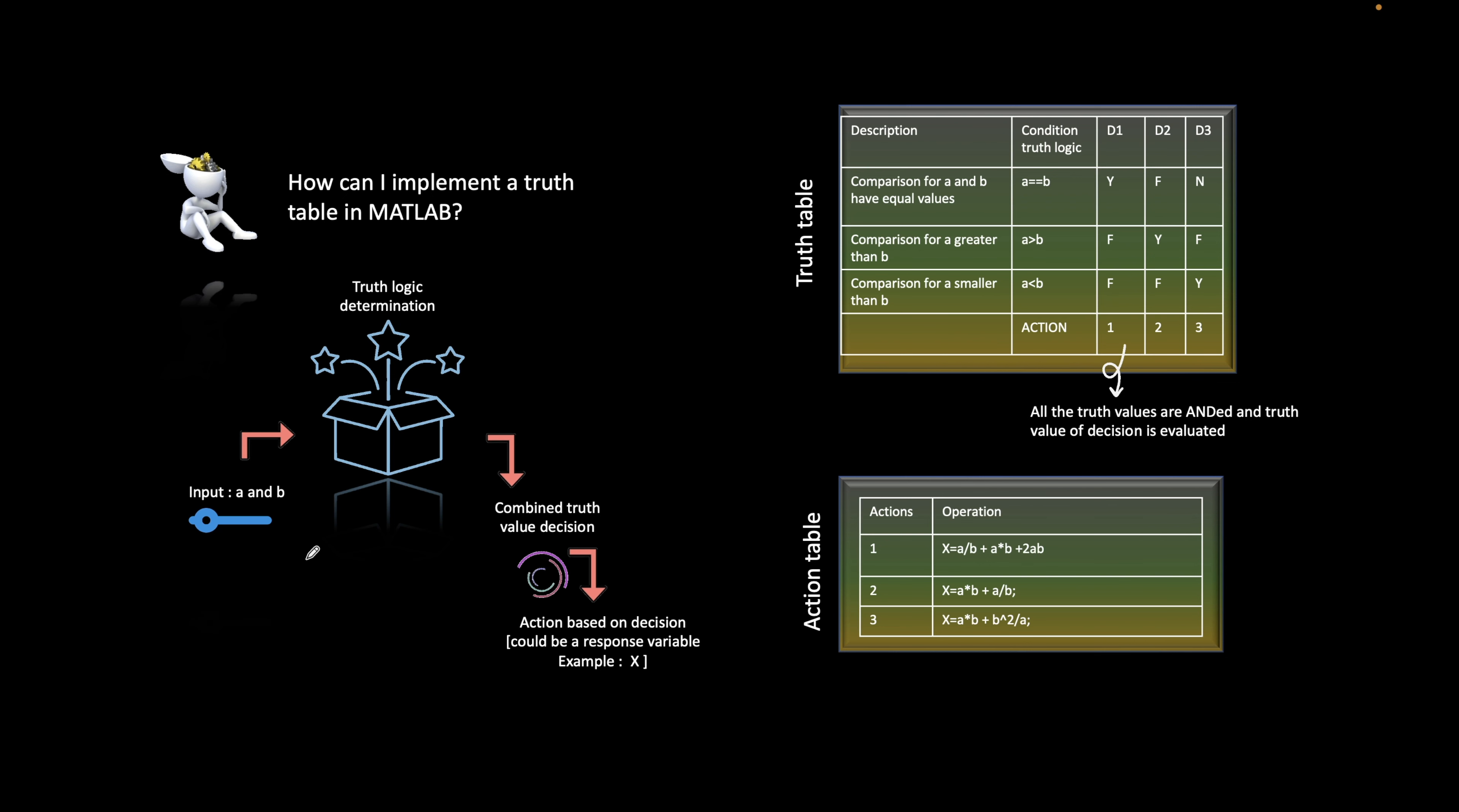In this particular video we will be looking into the over-specified conditions in a truth table. So suppose you have implemented a truth table with the decision table or the condition table, along with that you have implemented an action table. As we already know, these two work together, but suppose you have defined some of the decisions.